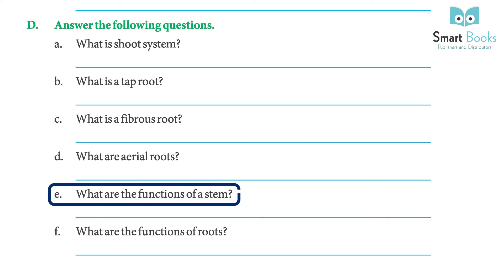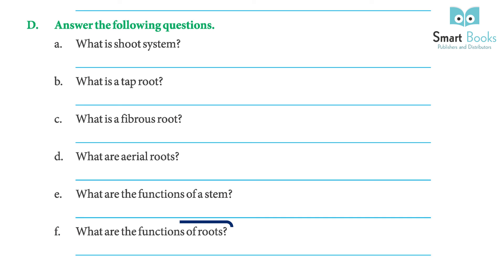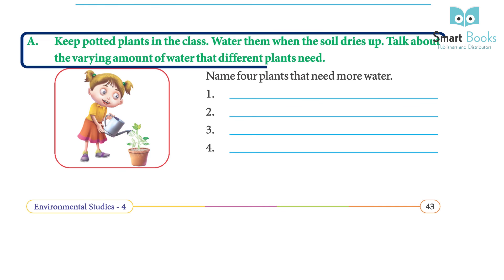E: What are the functions of a stem? Answer: the stem transports water, minerals, and food to different parts of a plant; the stem keeps the plant straight and bears leaves, flowers, and fruits. F: What are the functions of roots? Answer: roots help the plant to absorb water and minerals from the soil; they hold the plant firmly to the soil and help the plant stand straight.